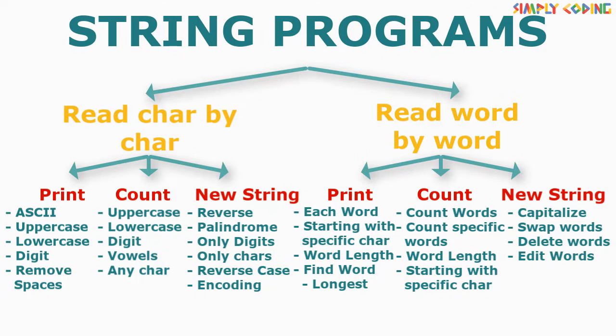For word-level programs, where you break the sentence into words and do some processing, these are also broken into three categories. The first is printing programs, like print each word separately, print words starting with a specific character, or of specific length. The second is counting programs, like count all words, count specific words like 'and' or 'or', count words starting with capital letters, or count words with specific length. The third type is where you make a new string by making changes to words, like capitalize each word, swap, delete, or edit some words.